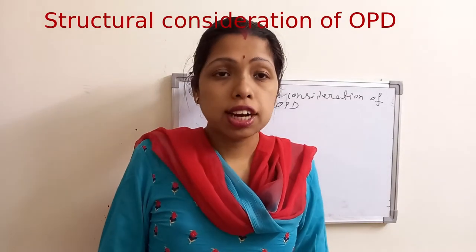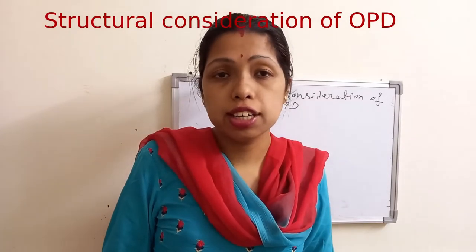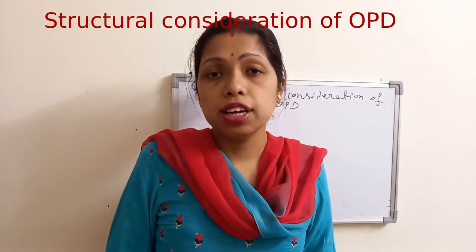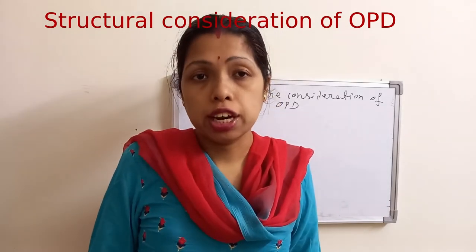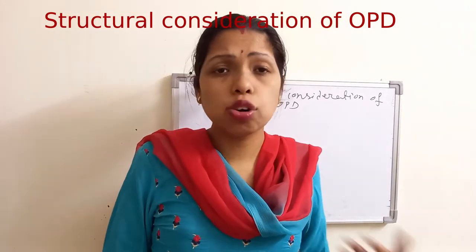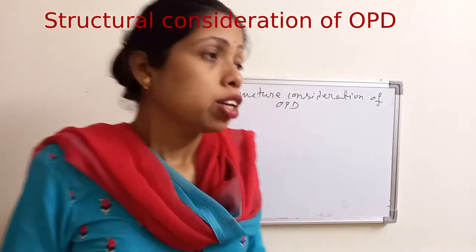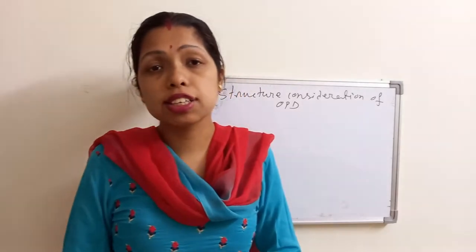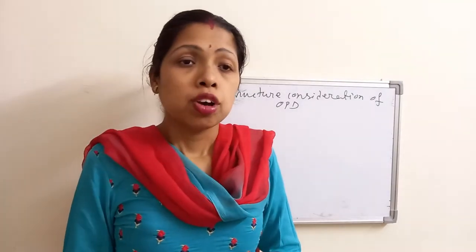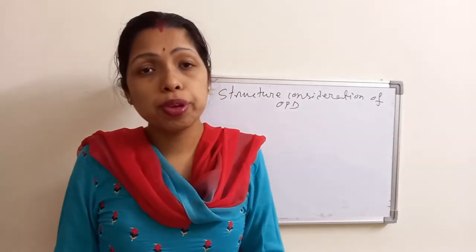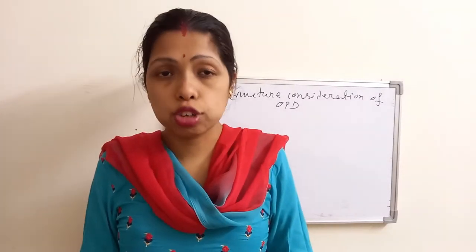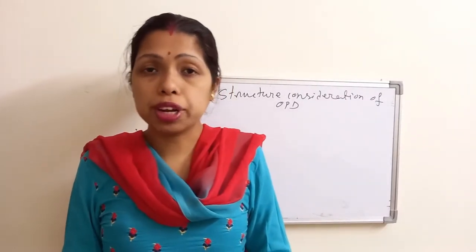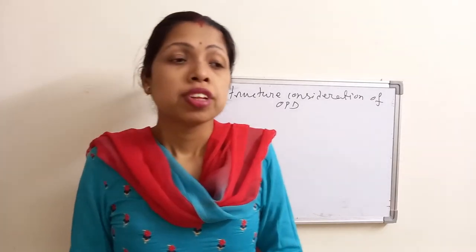Hello friends. Last class I discussed about what criteria are required to fulfill the designing of the organic photodetector. Today's class is the continuation of the previous class. I have told some common properties like optical properties and electrical properties of the organic semiconductors — what are the criteria required and what kind of organic material can be used for designing an organic photodetector. It should have some kind of optical and electrical properties.